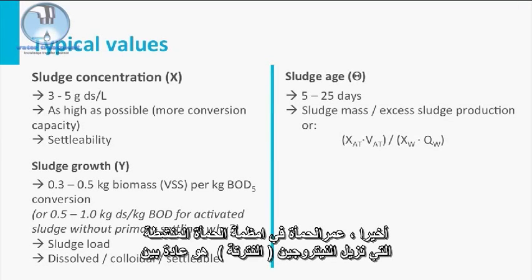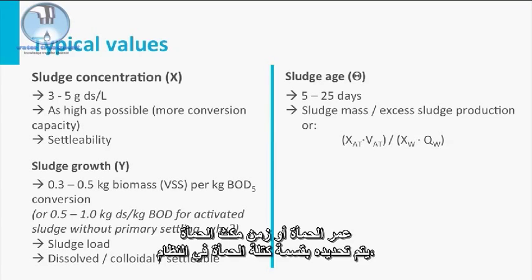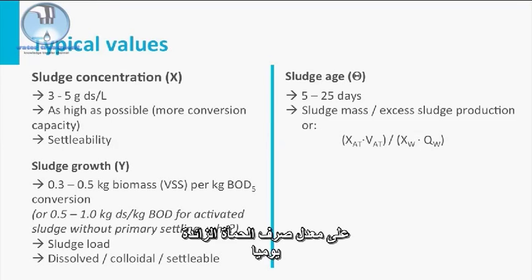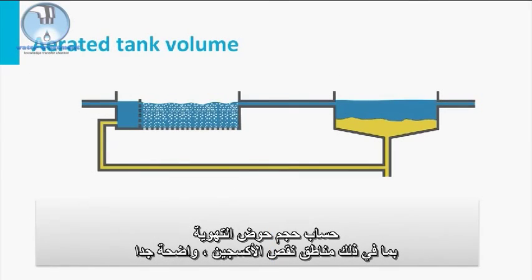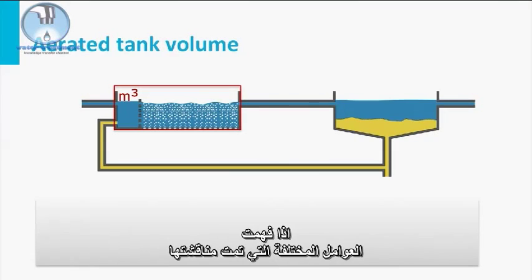Finally, the sludge age of activated sludge systems with nitrification is typically between 5 and 25 days. The sludge age, or solid retention time, is determined by the mass of the sludge in the system divided by the waste sludge or excess sludge production per day. The calculation of the aeration tank volume, including the anoxic zones, is very straightforward when you understand the different parameters discussed.